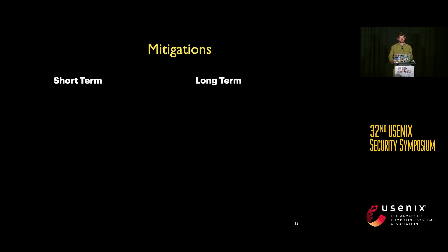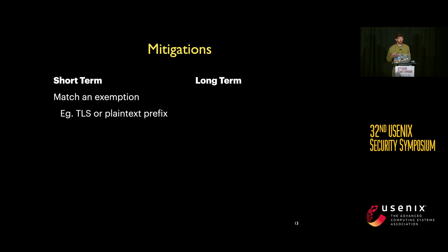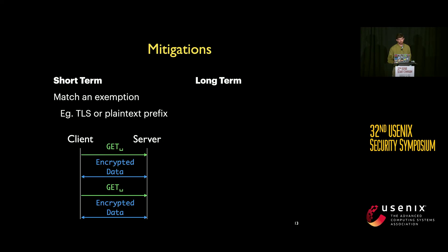Looking at mitigations for circumvention tool developers: in the short term, tools can naively match exemptions by prepending traffic with TLS or HTTP bytes. In the longer term, developers will want to modify the entropy of the payload, which can be done by padding the payload with zeros or ones to exceed or fall under the threshold we identified.